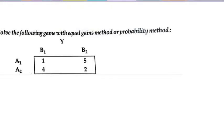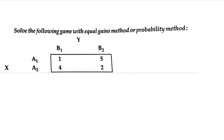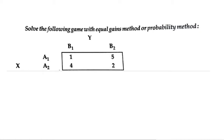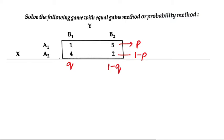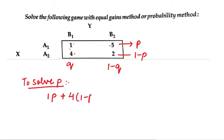Now let us implement the probability method on a 2x2 question. The question says: solve the following with the equal gains method or probability method. Let us suppose A selects A1 with probability P, so A2 is with 1 minus P, and B selects B1 with probability Q and B2 with 1 minus Q. The matrix values are: A=1, B=5, C=4, D=2. To solve for P: 1·P + 4·(1−P) = 5·P + 2·(1−P).